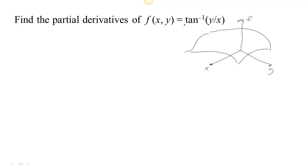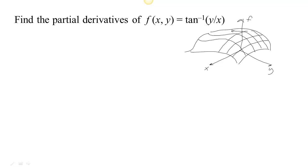If we think about freezing one of the variables — holding y constant — then as we change x we get a curve. If we set y to a different constant, we get another curve that lies along the surface. Depending on the constant value we choose for y, we get a different curve. Also, if we set x to be some constant, then as we change y we'll see a curve in the other direction. So really this surface is made up of a bunch of curves.